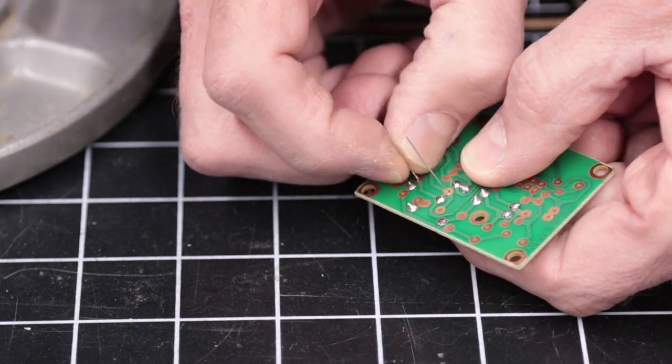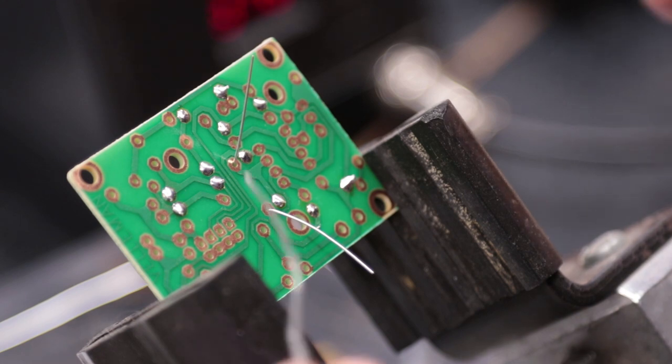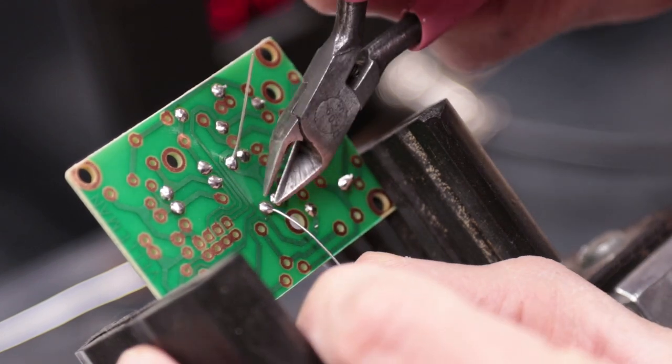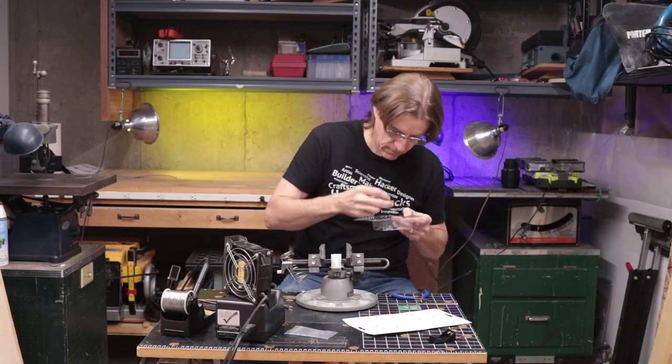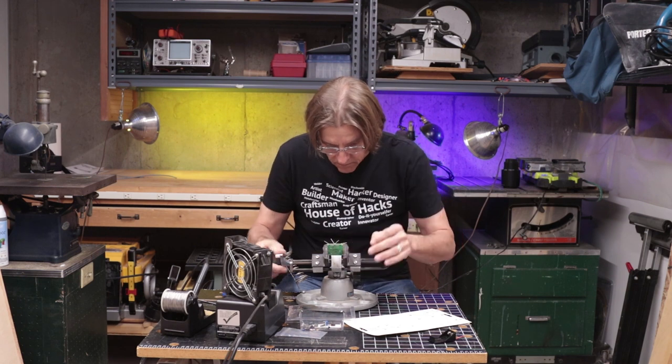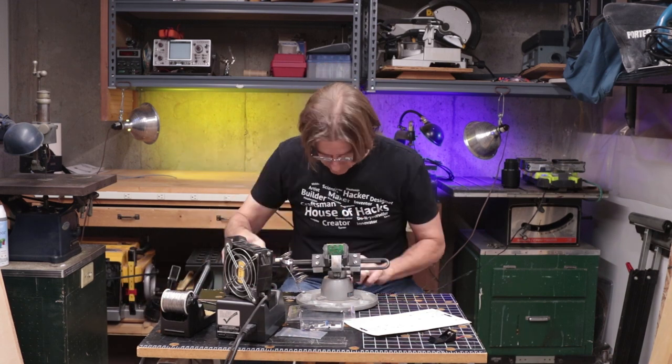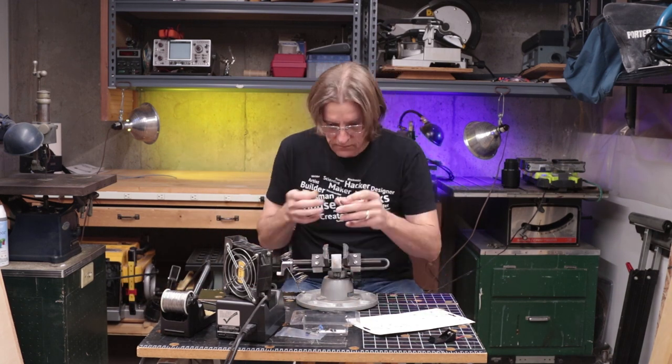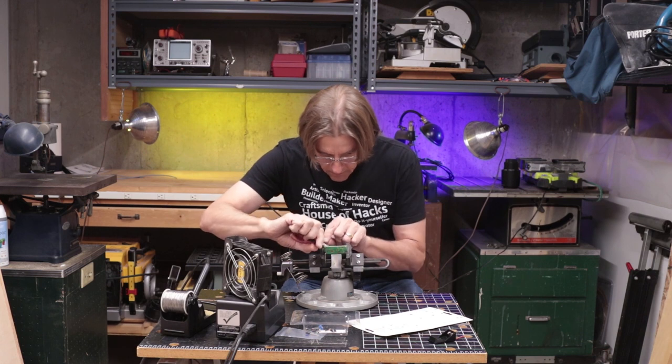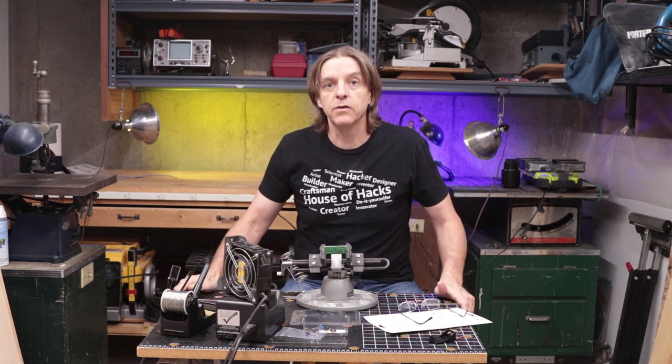And on the back, we'll just bend these leads over. That'll just kind of hold it in place before we get the solder in. So that does it for the resistors.